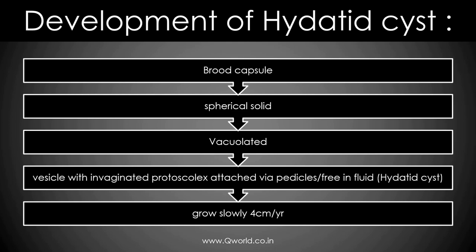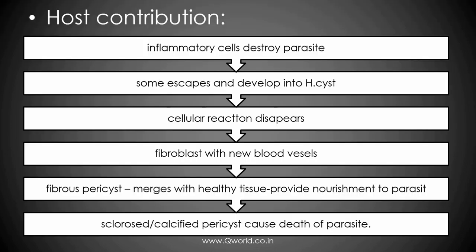How does the cyst develop? Initially there is a brood capsule, then a spherical solid organ forms, which then gets vacuolated. Then a protoscolex forms with invaginated protoscolex attached to the wall, free fluid develops, and it slowly grows at about 4 cm per year. The host contribution is basically the pericyst, which is the inflammatory reaction around the cyst.